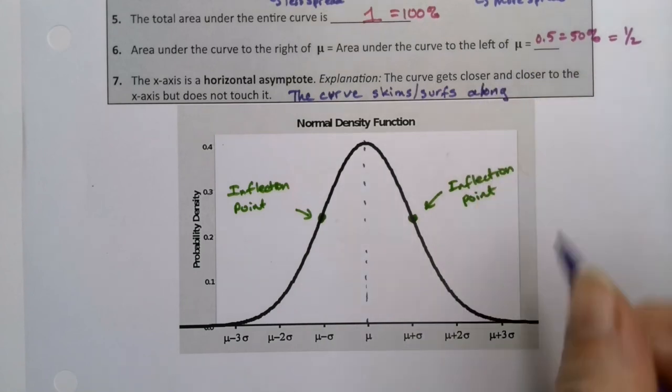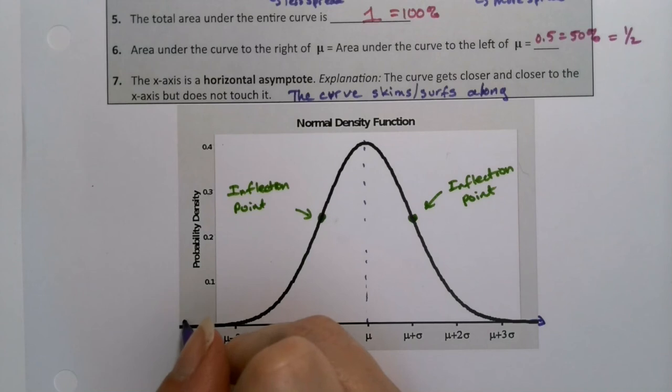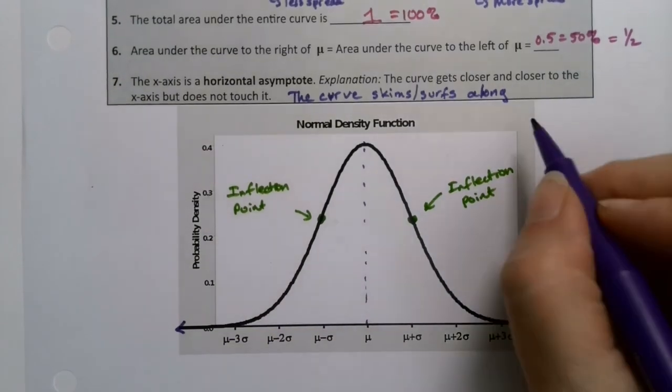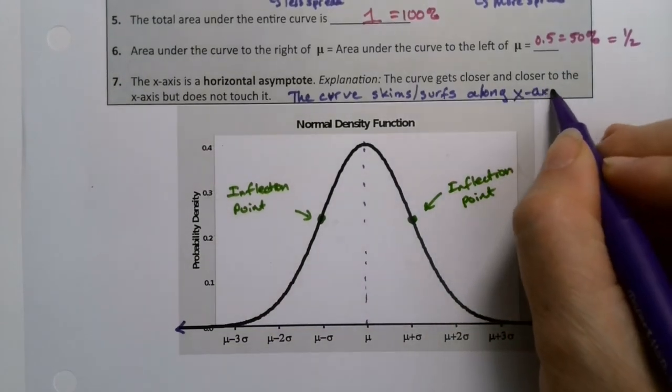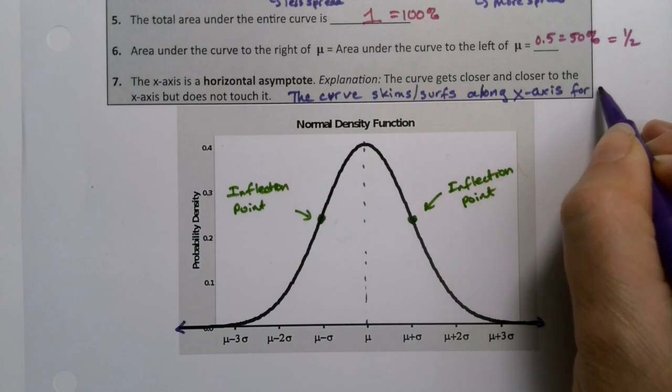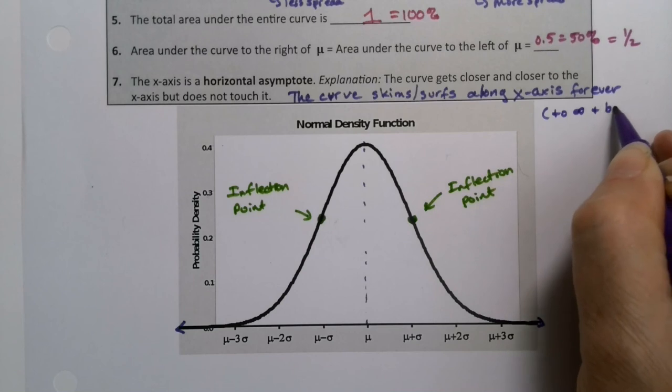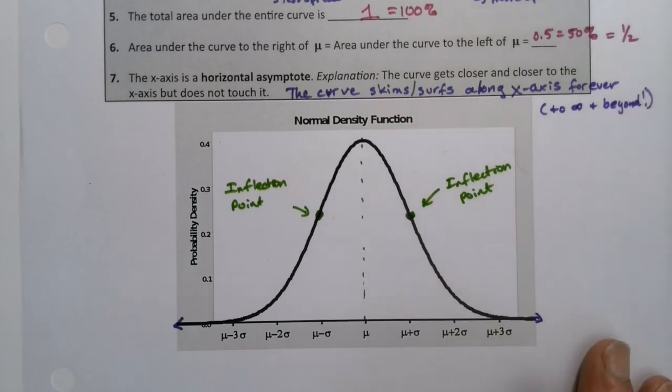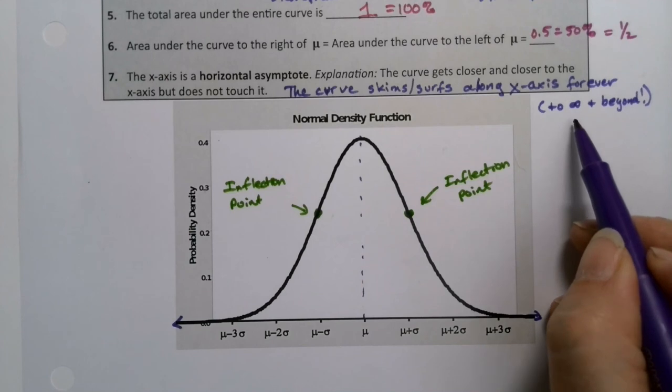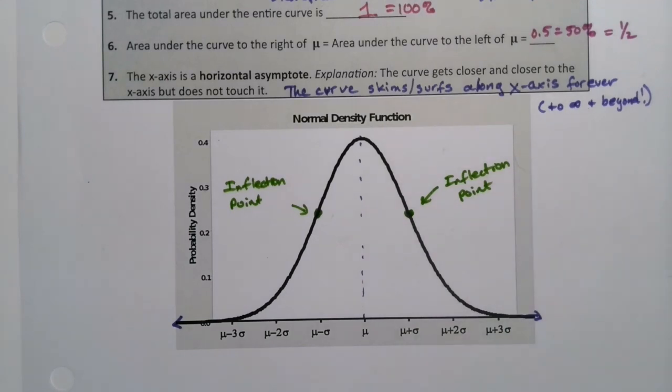The curve skims or surfs along the x-axis, but it never crosses. And it does it in both directions. It actually goes forever. There's little arrows here without you seeing it. So the x-axis forever. To infinity and beyond. To quote Buzz Lightyear. And that's a symbol for infinity, by the way. It's like a sideways 8. But if you want to write the word infinity, that's fine, too.